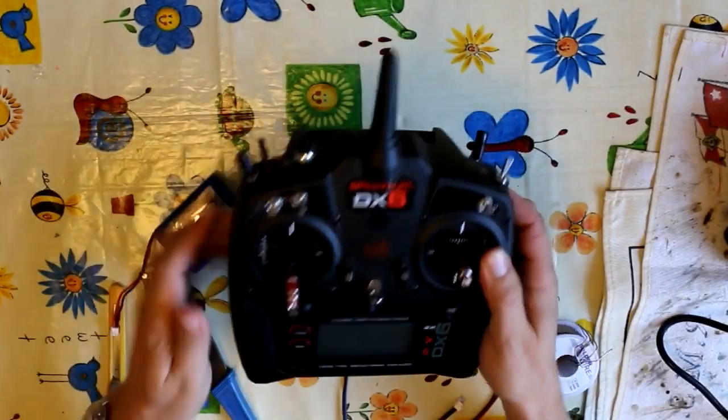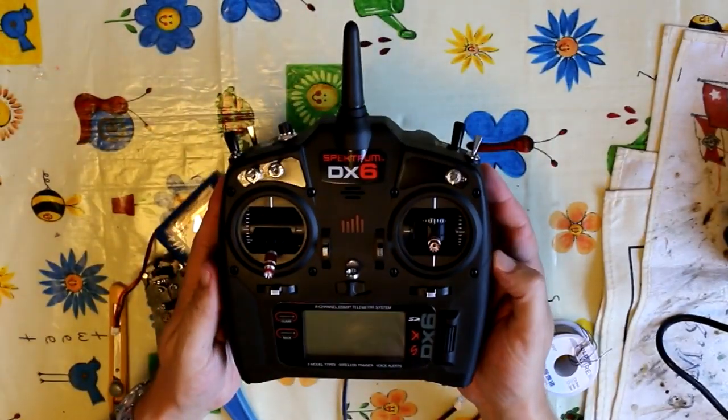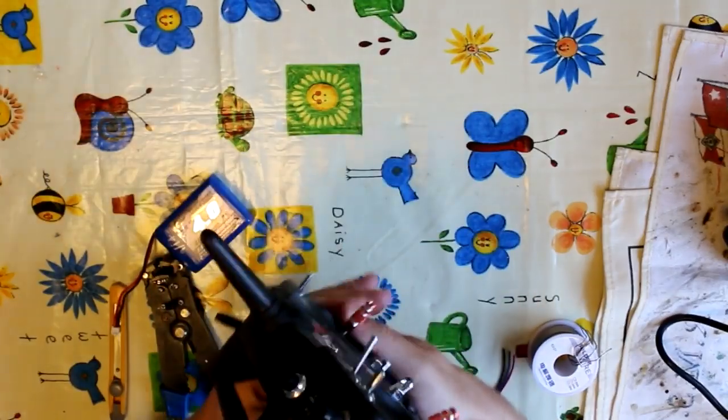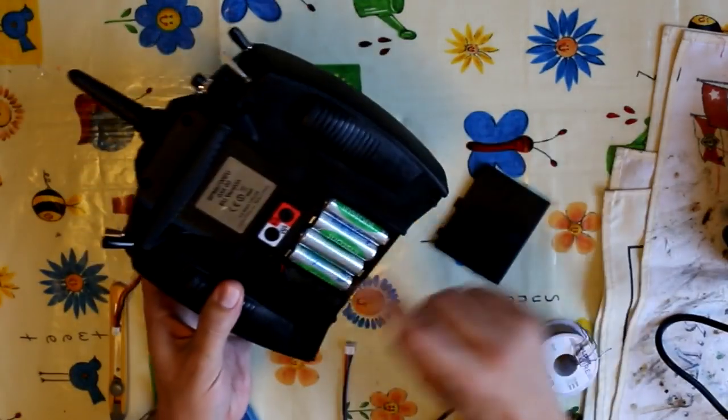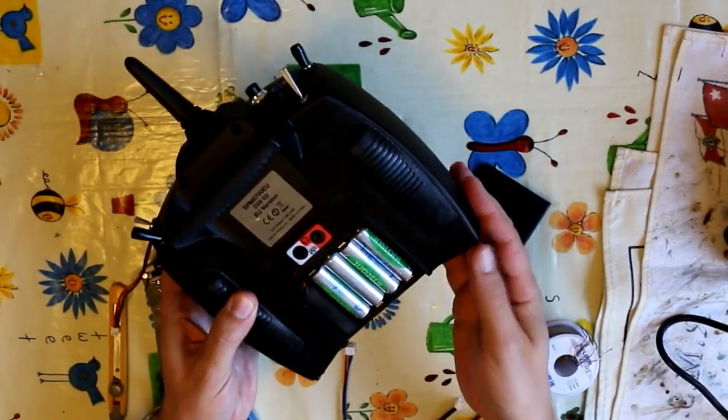This is a quick video about the new Spectrum DX6 radio which I'm really liking. It comes with a little holder to take four AA cells, which obviously isn't great.